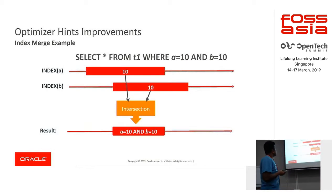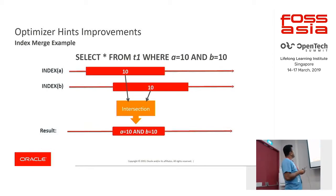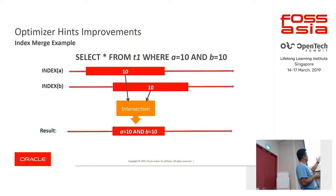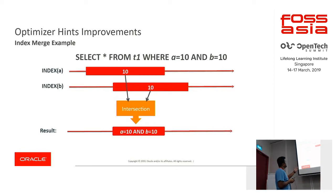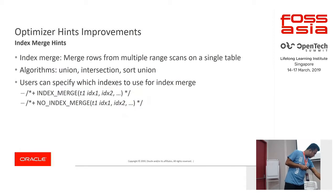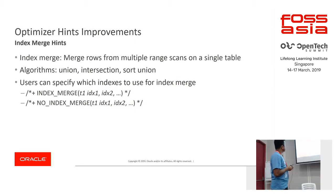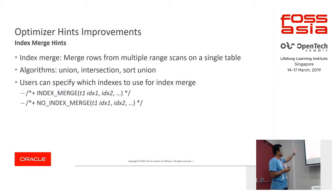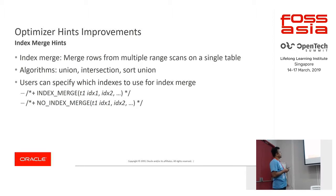Similarly, you can use index merge hints for merging indexes on tables. You specify which indexes you want to merge, and it will merge those from multiple range scans onto a single table.